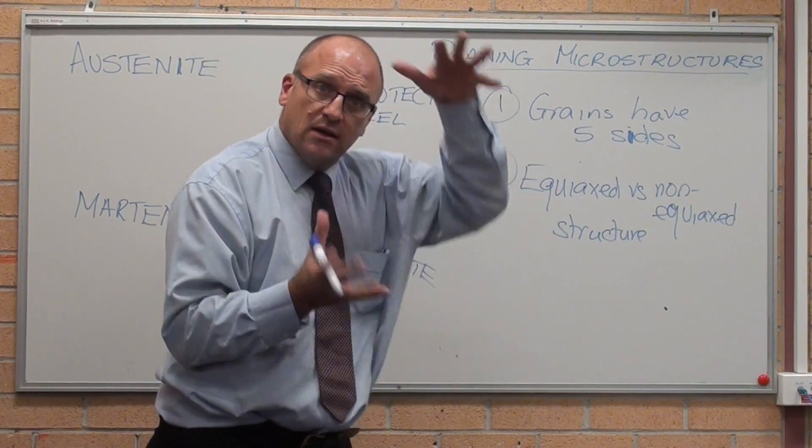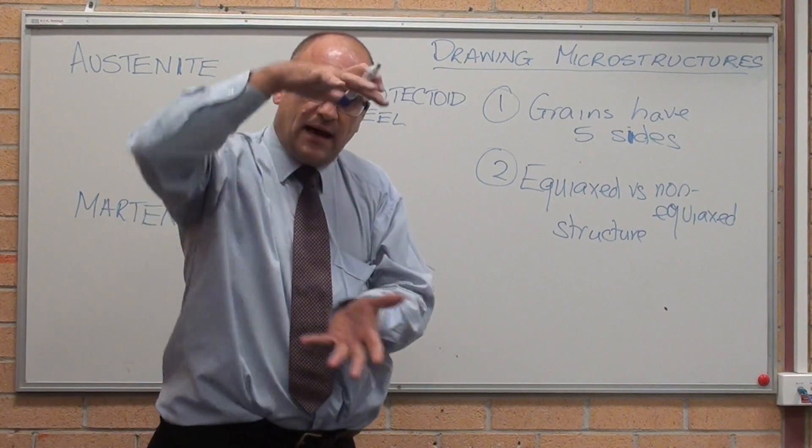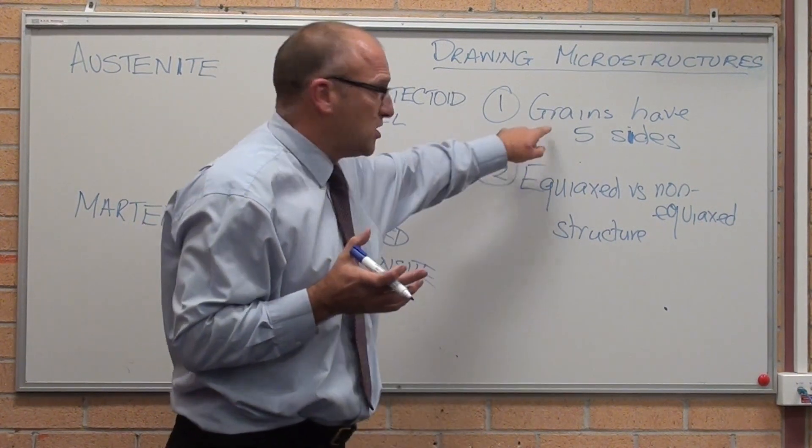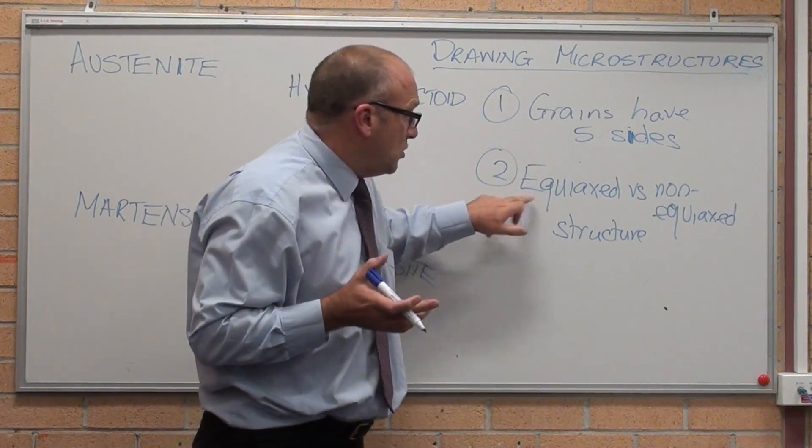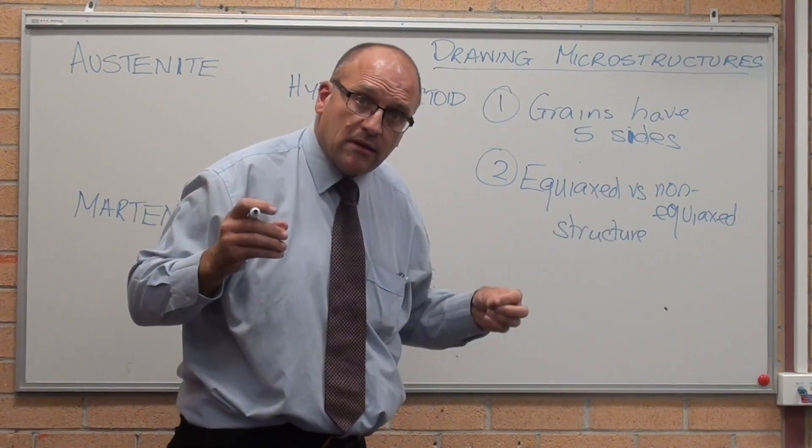An equiaxed structure is equal in all sizes. So it's basically, I was going to say spherical, but it's kind of an equivalent size in all directions. It can't be spherical because grains have got sides. Non-equiaxed means the grains are longer in one direction than they are in the other two.